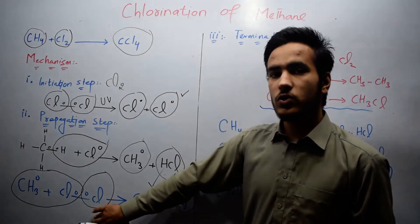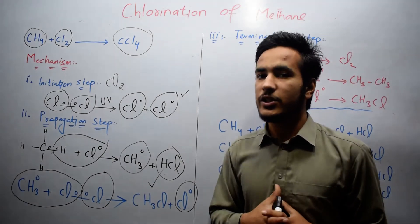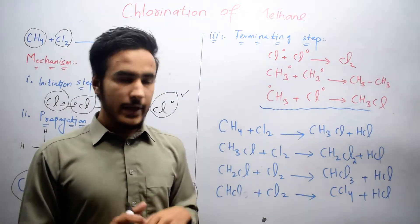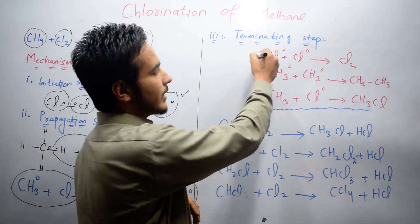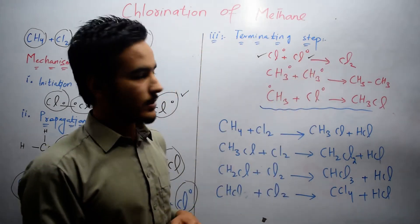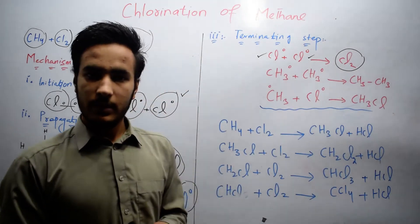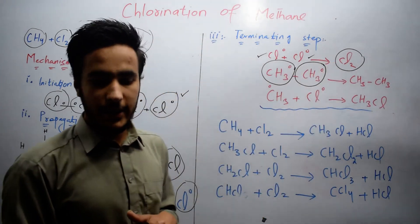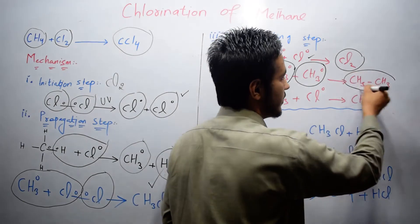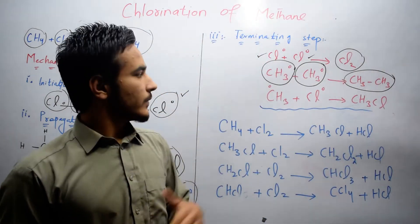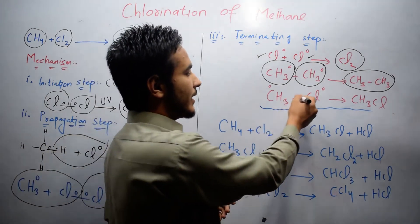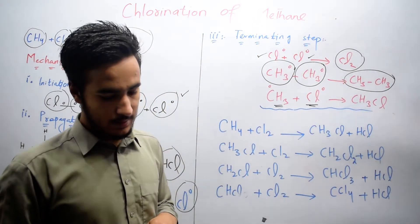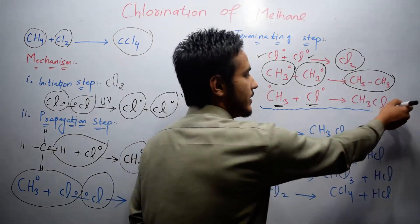The chain reaction does not stop until all reactants are consumed or when two radicals combine with each other. That is the third step, known as the termination step. In the termination step: a chlorine radical combines with another chlorine radical to give Cl2; a methyl radical combines with another methyl radical to give ethane CH3CH3; or a methyl radical combines with a chlorine radical to give CH3Cl.